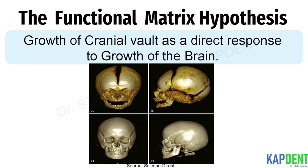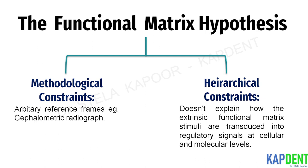A drawback of the original theory is that there is no clarification on how functional needs are transmitted to the tissues. According to Moss himself, the original theory faced two constraints: methodological and hierarchical. The methodological constraint arose due to the use of arbitrary reference frames like the cephalometric radiograph; this problem is now circumvented by the introduction of the finite element method. The hierarchical constraint arose because the original theory does not explain how extrinsic functional matrix stimuli are transduced into regulatory signals at the cellular and molecular levels, leaving the original version sandwiched between these two hierarchical levels.